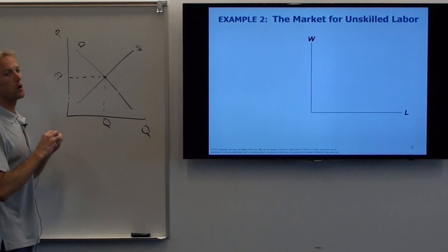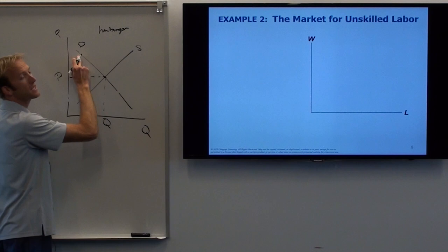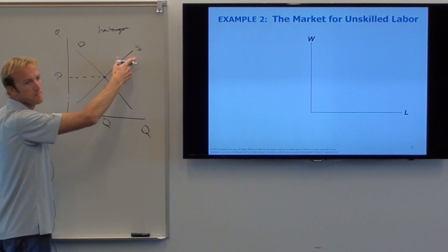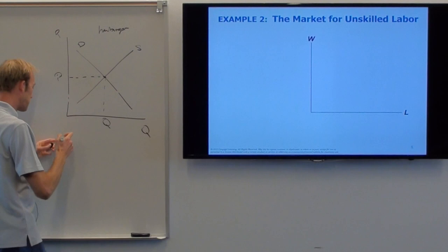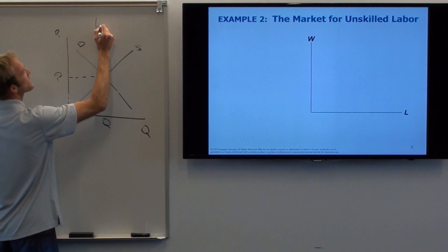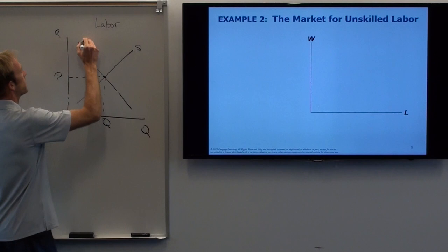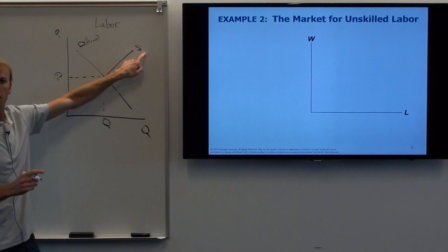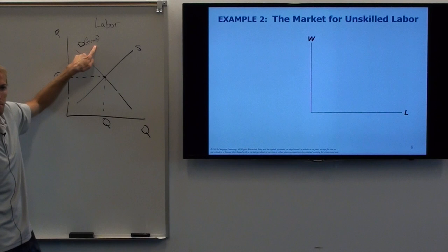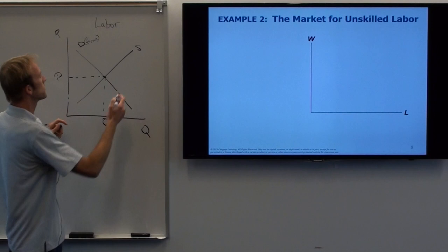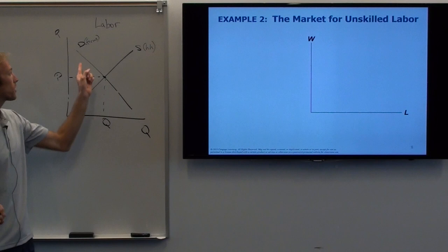For a normal good like a hamburger: who demands hamburgers? Households. Who supplies hamburgers? Firms — burger factories. However, the labor market is a little weird. Who are the demanders of labor? Firms. This is the opposite — because normally firms are on the supply curve. But in the market for labor, who is buying labor? The firms. And who is supplying the labor? Households. So in this marketplace, the supply and demand curves are flipped.